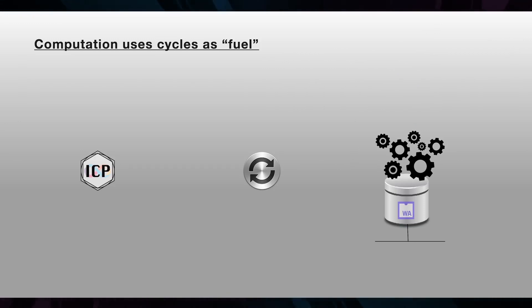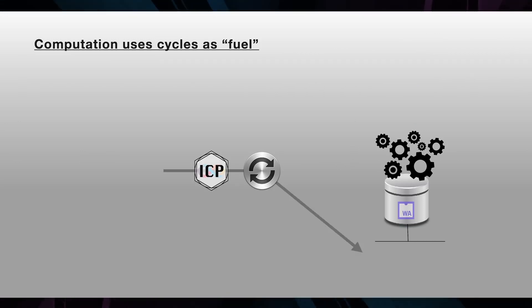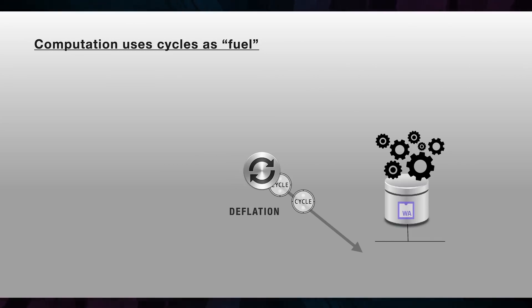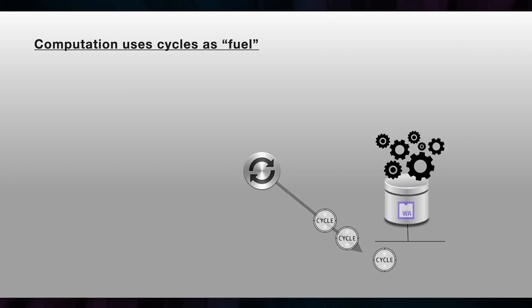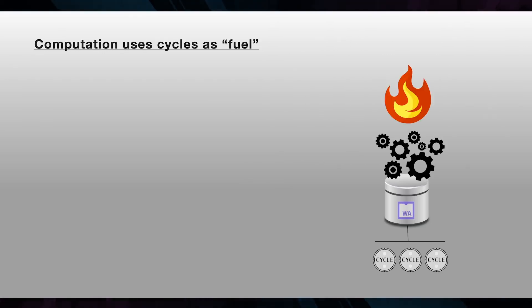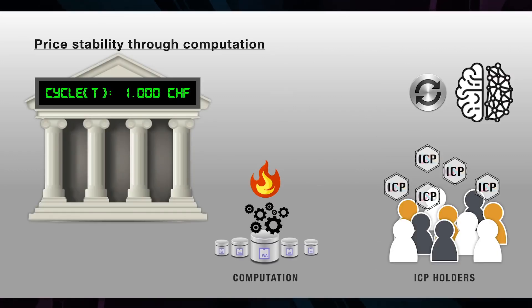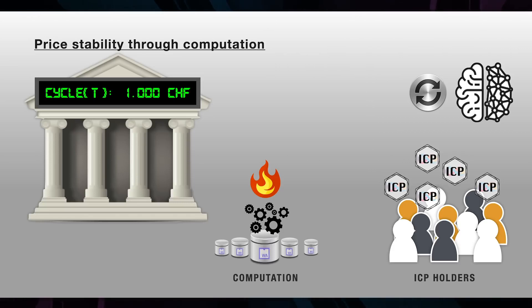This guarantees that so long as computations are running on the Internet Computer, someone somewhere must be buying ICP tokens as a means to create the Cycles that power them. When ICP tokens are converted into Cycles and burned by computation, that's deflationary as it reduces the supply. The value of Cycles will stay approximately constant, which ensures that the cost of computation remains stable and predictable and allows them to be used as a store of value, for example within DeFi applications.